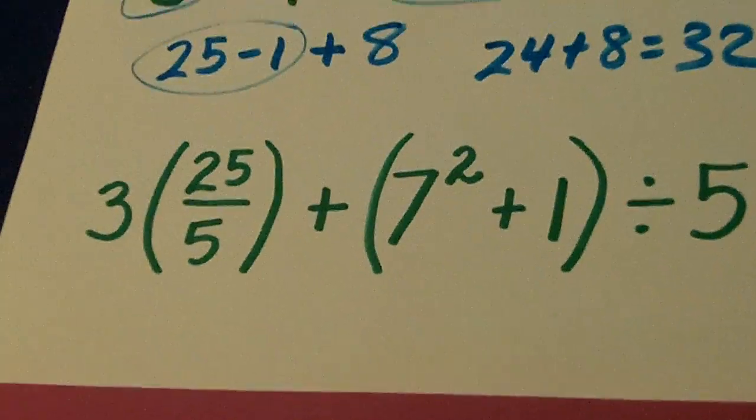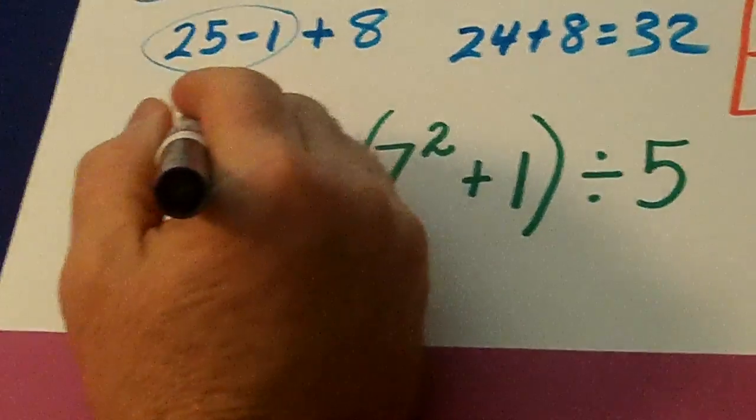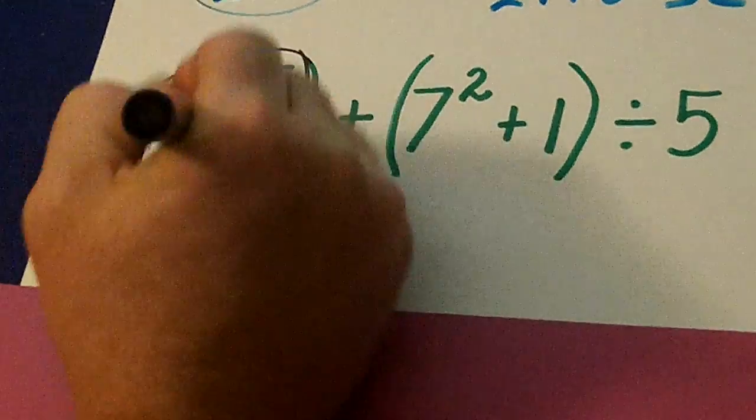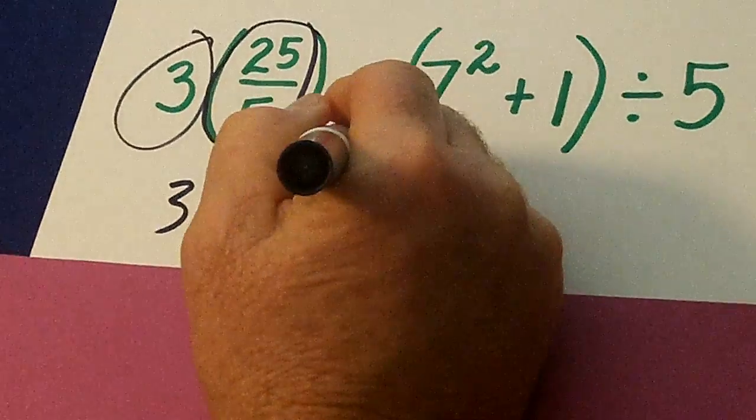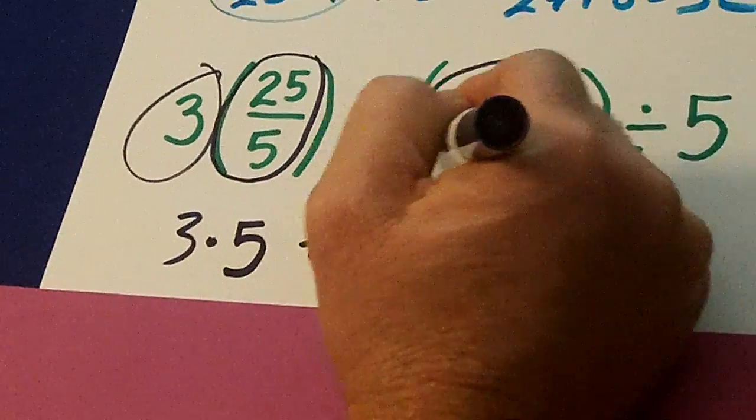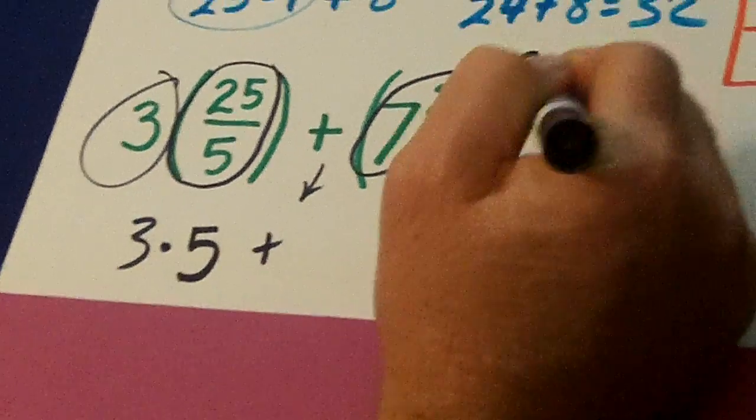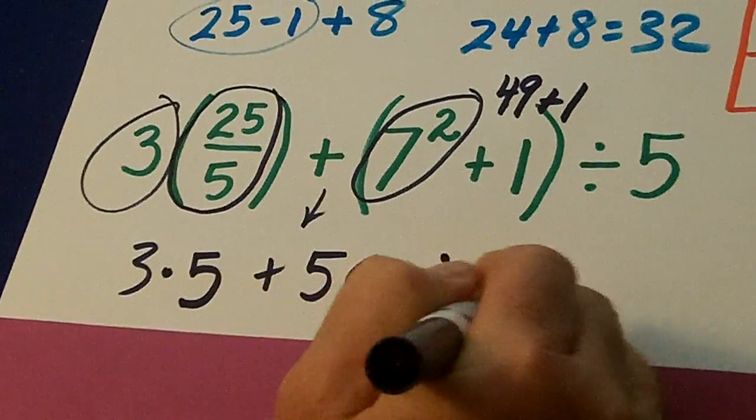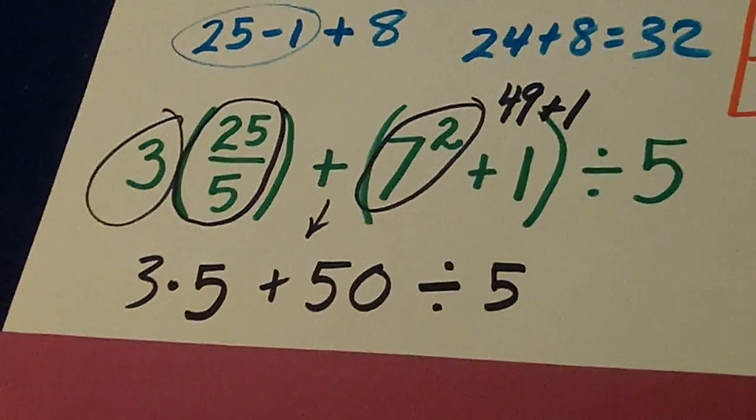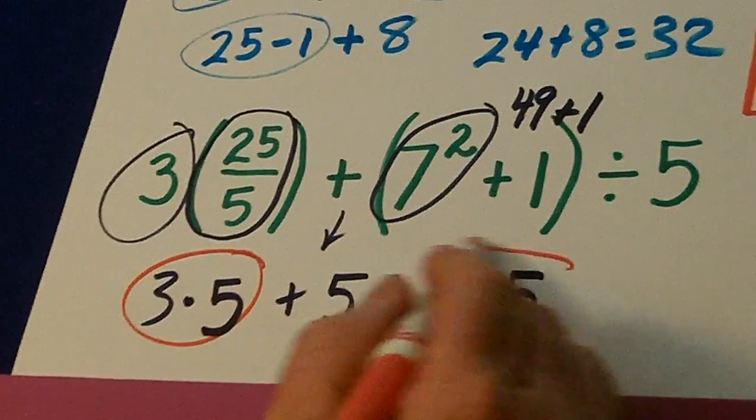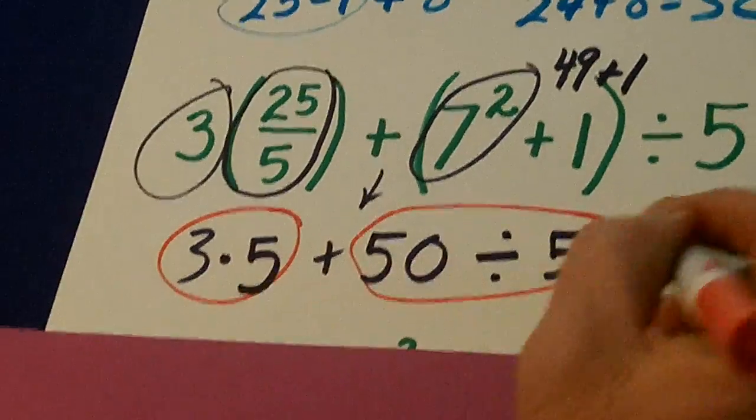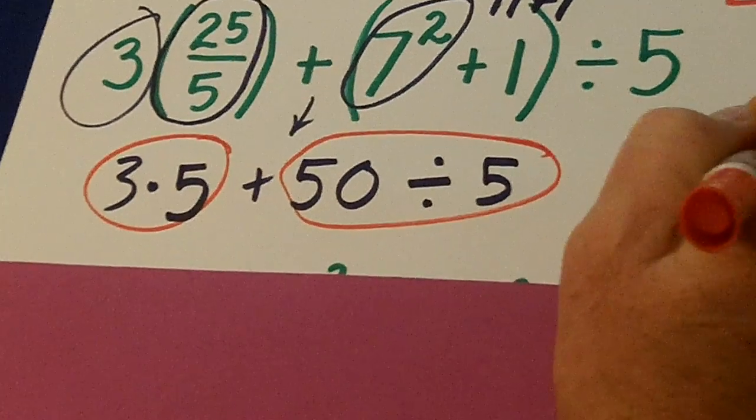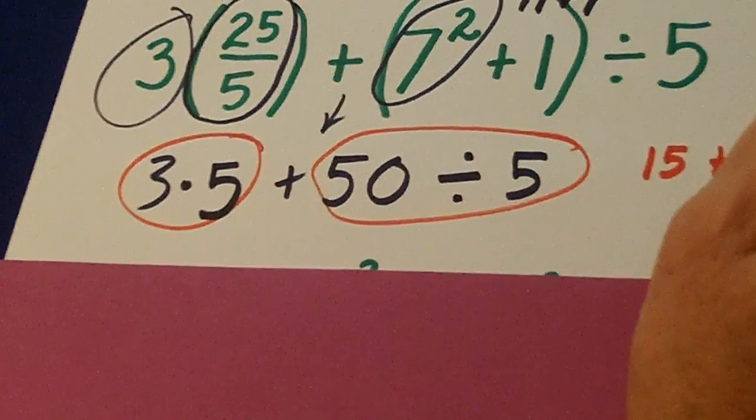Look at this fancy thing. We have parentheses, 25 divided by 5. That's 5 times what's out in front, 3. Bring down the plus. 7 squared is 49 plus 1 plus 50 divided by 5. That's a lot. We're going to do these before the plus. 3 times 5 is 15 plus 50 divided by 5 is 10 is equal to overall 25.